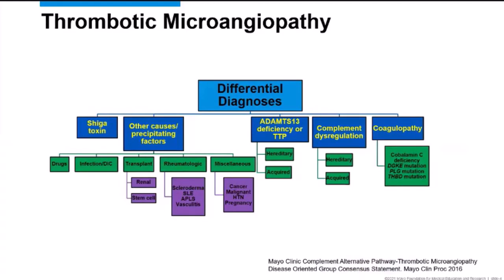Thrombotic microangiopathies are a heterogeneous group of disorders with a broad differential diagnosis. Commonly discussed TMAs include thrombotic thrombocytopenic purpura (TTP), due to ADAMTS13 deficiency, and typical hemolytic uremic syndrome, due to Shiga toxin. TMAs can also occur due to rheumatologic disorders like lupus or antiphospholipid antibody syndrome, certain medications such as gemcitabine or calcineurin inhibitors, malignancy, or malignant hypertension.